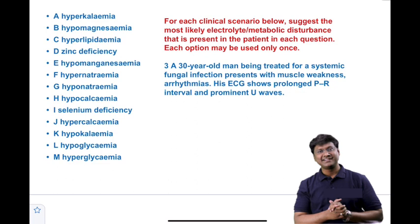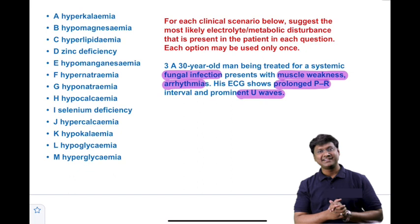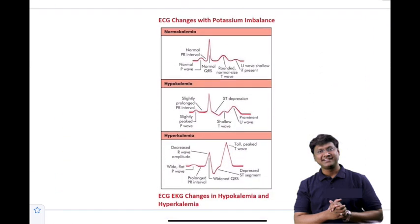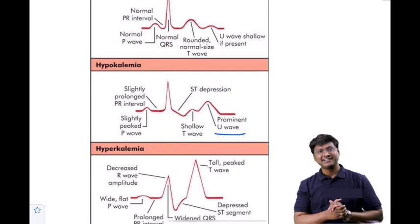The third clinical scenario is a 30-year-old man being treated for a systemic fungal infection who presents with muscle weakness and arrhythmias, with an ECG showing a prolonged PR interval and prominent U waves. This is suggestive of hypokalemia. The antifungal drug amphotericin B causes potassium loss, resulting in hypokalemia.